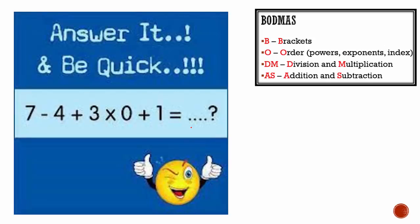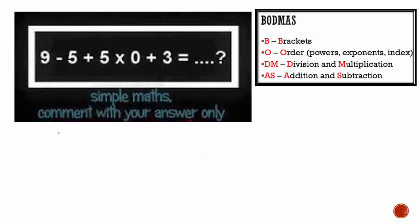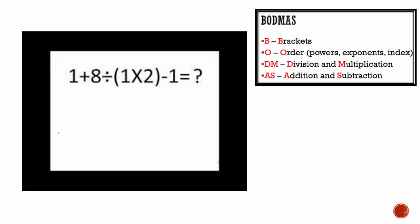Next question. Again, no brackets, no orders. So we just do division and multiplication first and then addition and subtraction after. Five multiplied by zero is equal to zero plus three. Very similar to the last problem: 9 minus 5 is equal to 4, 4 plus 0 is equal to 4, 4 plus 3 is equal to 7.